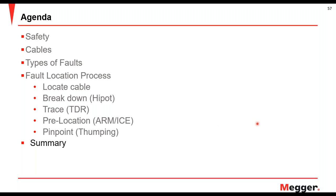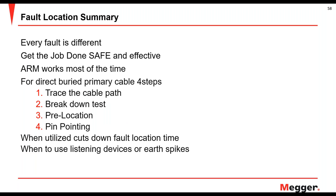Finally, the summary: every fault is different. You need to know that the whole reason for cable fault location is to get the job done safely first and effectively. Arc reflection works most of the time — if you can't arc reflect, try ICE. This is for direct burial cable. There's a four-step process: I recommend tracing the actual cable path itself, then at minimum do the high pot to see where it flashes over.